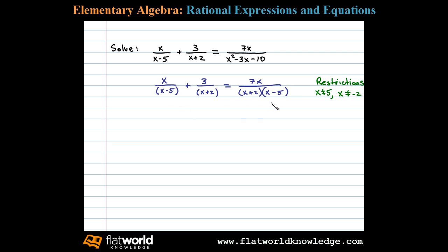Once we make note of the restrictions, we then identify the LCD. In this case, x plus 2 times x minus 5, and multiply both sides by the LCD. Multiplying both sides by the LCD and then distributing is equivalent to multiplying all the terms by the LCD.